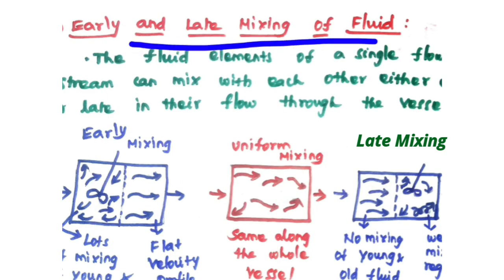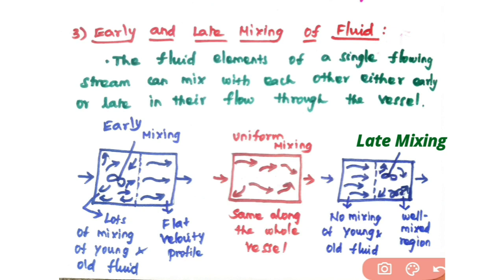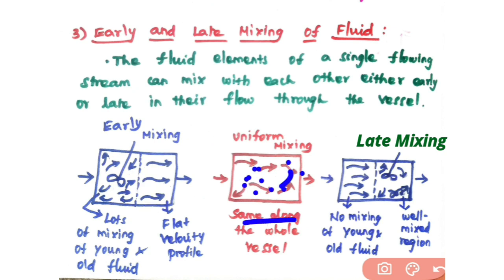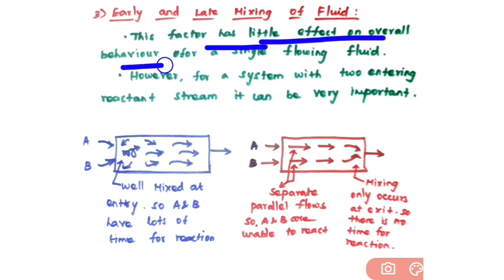The third factor is early and late mixing of fluid. Fluid elements of a single flowing stream can mix with each other early or late in the flow through the vessel. There are three conditions: early mixing, uniform mixing throughout the reactor, and late mixing. In early mixing, lots of mixing takes place at the early stage — lots of mixing of young and old fluids — and at the end of the tube there is a flat velocity profile with no mixing. In the second condition, you have uniform mixing throughout the whole vessel. In the third condition, late mixing, there is no mixing of young and old fluids at the initial stage, and the contents are well mixed only at the end of the tube. This factor — early and late mixing — has little effect on overall behavior for a single flowing fluid.